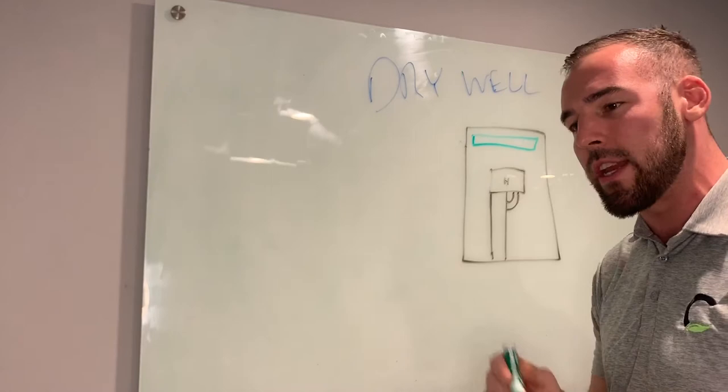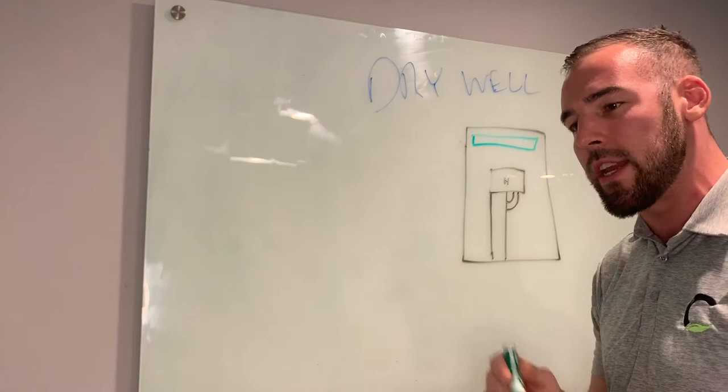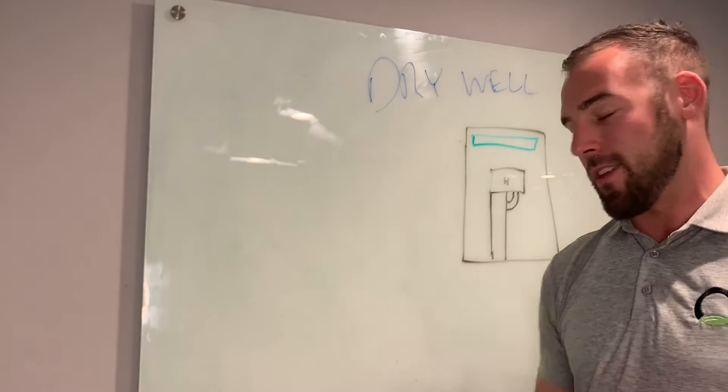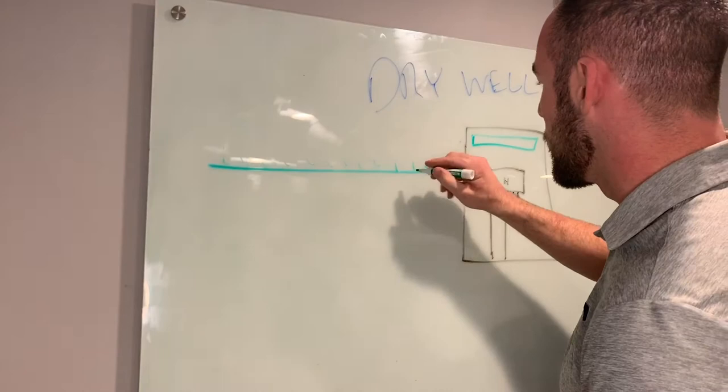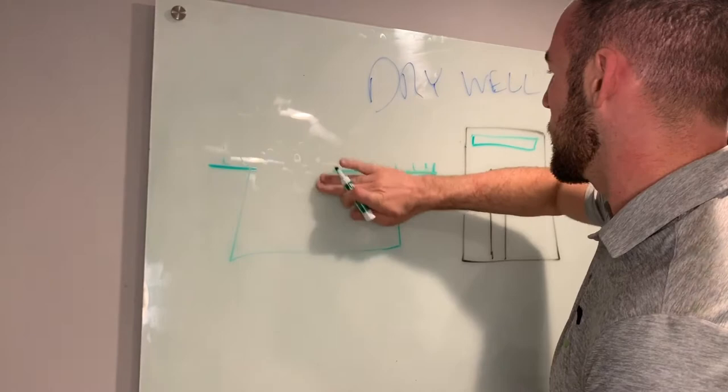A dry well is going to be sort of similar to a French drain in that we need to excavate out a hole, fill it with stone, except it's going to stay there. And here's what I mean. So you've got your grass here, sort of like this, blades of grass. We're going to come in. We're going to dig a hole. All right, so now this is open to the air.